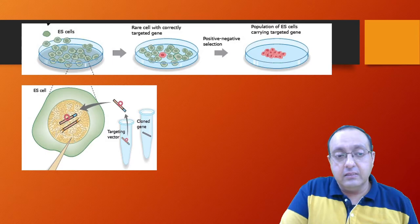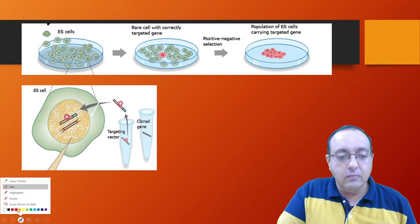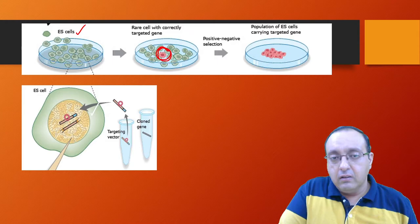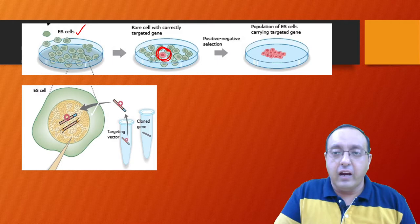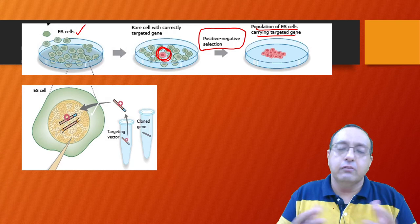Now what we do is—we've already run the transfection part. Now we grow these ES cells. So hopefully our ES cells with all the required transgene have been identified. We use positive-negative selection, and we grow this population of ES cells carrying the targeted gene. So this will create a small mass of cells which will be the ES cells containing the transgene.